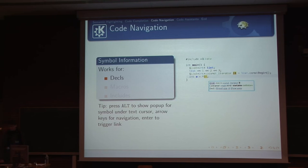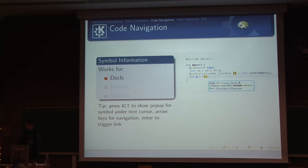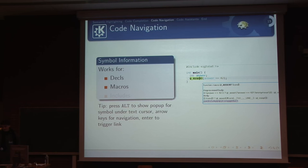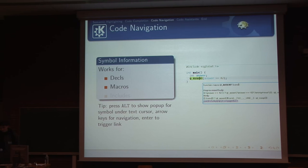Code navigation: you can move the cursor around and press Alt or hover a declaration with your mouse, and we show a little pop-up giving you information about the symbol under the cursor. You can click links to jump to the declaration or show all users. We also show macro definitions, which is useful to see what's going on — especially if you see a parse error inline and don't know what the macro actually does. Just hover it and see.